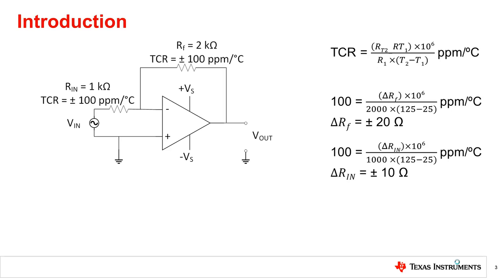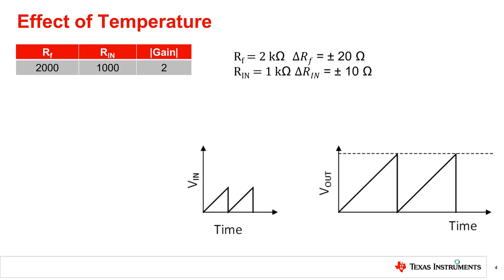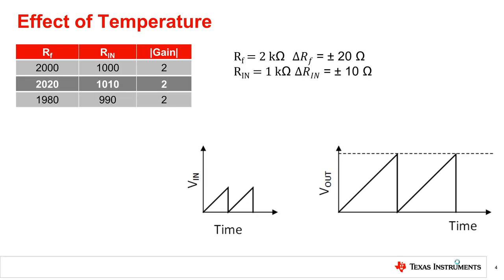As computed earlier, the magnitude of the ideal gain for the circuit is 2. Let us assume that the input small signal is a sawtooth wave, which is amplified with the gain of 2. The dashed line for Vout shows the maximum output signal level possible. In this ideal case, the output signal is equal to the maximum output level. Now at 125 degrees Celsius, if both resistors drift the maximum positive or negative TCR, the gain remains unchanged, and so does the output signal.